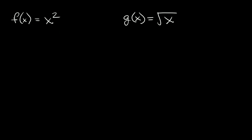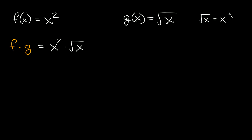Here's a multiplication problem. f of x is equal to x squared, and g of x is equal to the square root of x. Let's multiply these together: f times g equals x squared times the square root of x. Now whenever you have a radical, the square root of x is the same thing as x raised to the one-half power. The cube root of x is x to the one-third, the fourth root is x to the one-fourth, and so on. That's how you convert from a radical to an exponent.